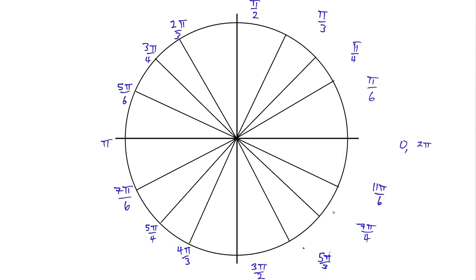Now we just need to figure out what the x and y coordinates of each of these points are. It's not too difficult for the points on the axes — those will be easy, a little more tricky for the ones in between. This point on the x-axis: it's a unit circle, the radius is 1, so the x value is 1 and the y value is 0. The top of the unit circle at pi over 2 has coordinates (0, 1). When our angle is pi, the coordinates are (-1, 0). And for an angle of 3pi over 2, our coordinates are (0, -1).